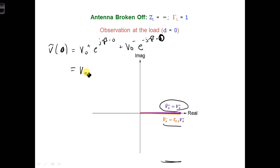So we would get v naught plus plus the voltage reflection coefficient at the load times v naught plus. And since this is equal to one, we get 2 v naught plus.